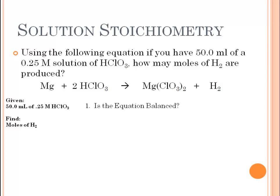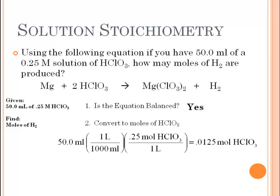As with any stoichiometry problem, you need to make sure that you have a balanced equation. Looking at the equation above, it is balanced — I've given you this balanced equation, but keep in mind not all equations you are given will be balanced. Now convert to the moles of chloric acid: take the volume given, change it to liters, then use the molarity — remember, molarity is moles per liter — to find the number of moles of chloric acid in that solution.